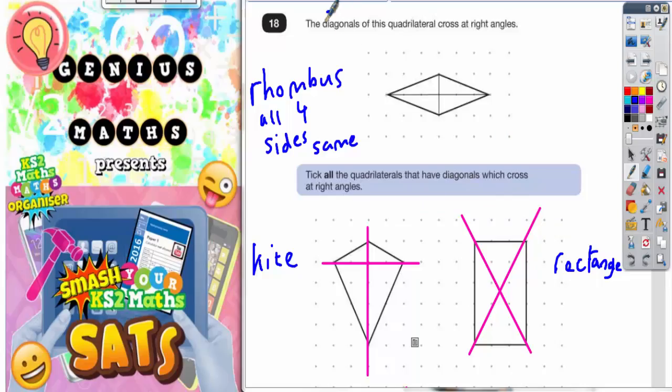Now the key word here is the diagonals. To find the diagonals in a quadrilateral, what you've got to do is join opposite corners. So this corner and this corner are opposite, so they're joined with that line. And this corner and this corner are opposite, so they're joined with that line. And these lines that we're joining here are called diagonals, and it says that they cross at a right angle.